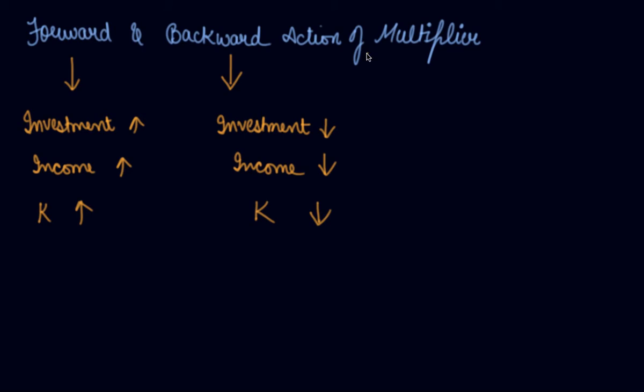The multiplier action is forward when there is a multiple increase in income caused by an increase in investment. On the other hand, the multiplier process is backward if there is a multiple decrease in income caused by a decrease in investment.